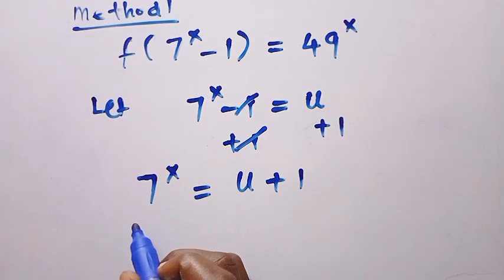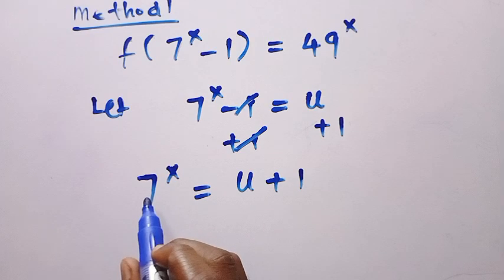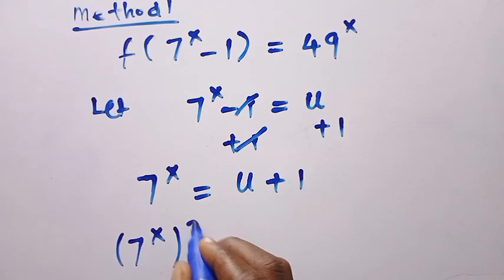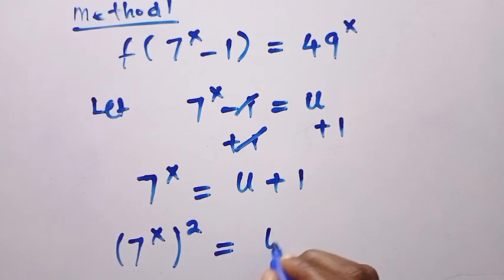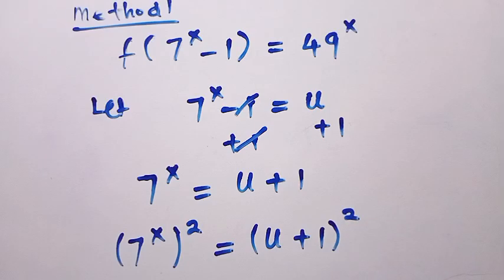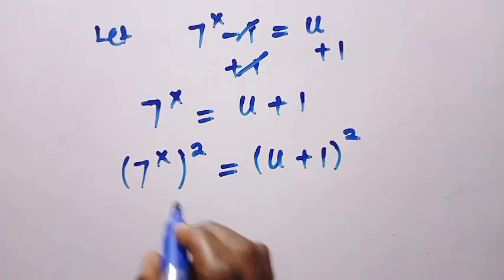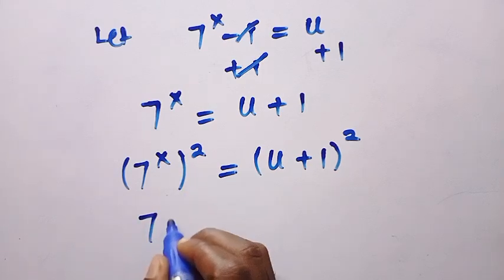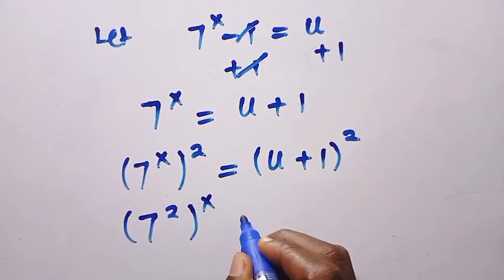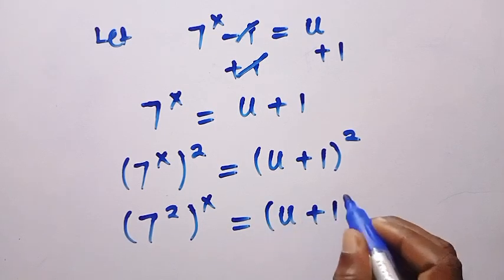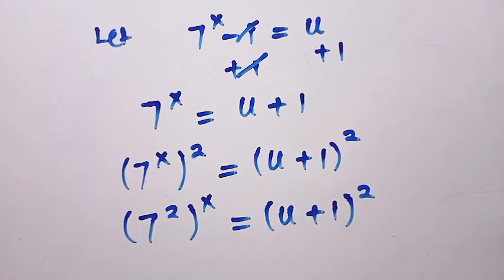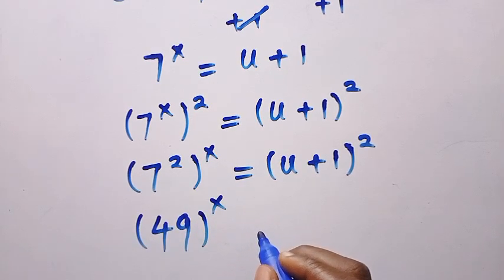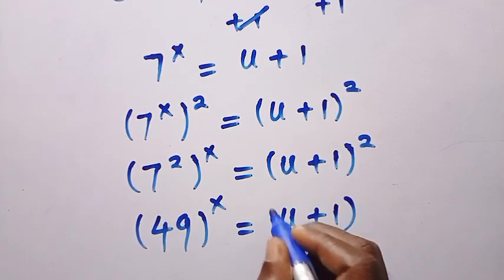Since I need 49 and 7 raised to the power of 2 gives us 49, we raise both sides of this equation to the power of 2. So we have 7 to the power of x, all raised to the power of 2, equals u plus 1 raised to the power of 2. By the law of exponents, we can rewrite this as 7 to the power of 2, all raised to the power of x, which equals 49 to the power of x, equals u plus 1 all raised to the power of 2.